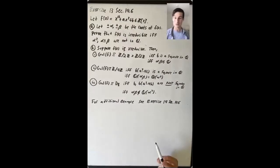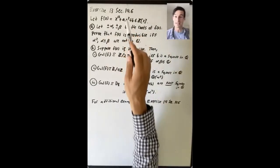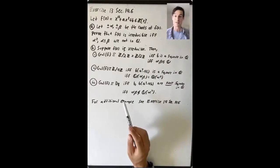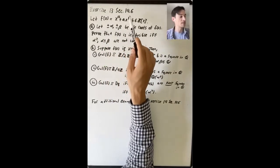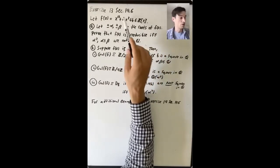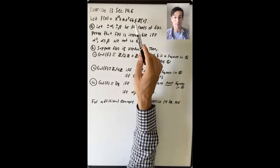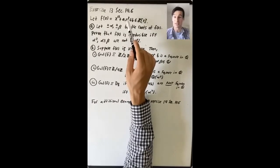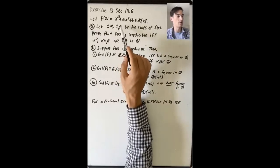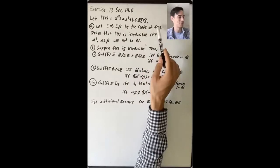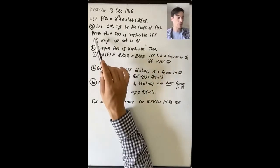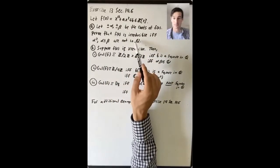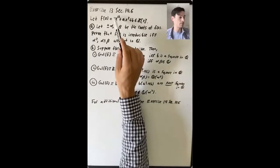Let's understand the Galois group of this special family of quartics all at once. This is exercise 13 in section 14.6 — I definitely recommend doing it; it's good practice for quartic polynomials on exams. Let f(x) = x⁴ + ax² + b ∈ Z[x], with roots ±α and ±β. Part (a): prove that f(x) is irreducible if and only if α² and α ± β are not rational.